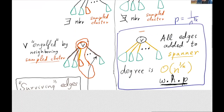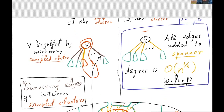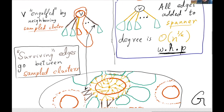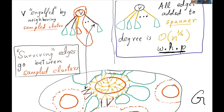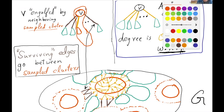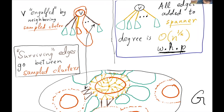Now I'll talk about the brown edges that survive to the next iteration. The brown edges are all the edges in case one that were neither deleted nor added to the spanner. Considering a sampled cluster connected to green (unsampled) clusters: a vertex V in case one can become part of a sampled cluster through that process. The edges between sampled clusters — the brown edges — can actually survive to the next iteration because they were not deleted or added to the spanner from either end.